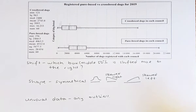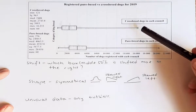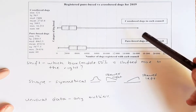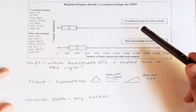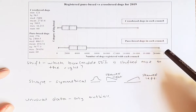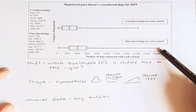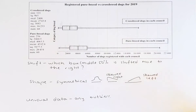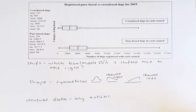Last, we look at the unusual data — the outliers. There are two outliers in total: one outlier in the crossbreed dog data and one outlier in the purebred dog data. You always have to mention that we would investigate further to see if those numbers are correct.